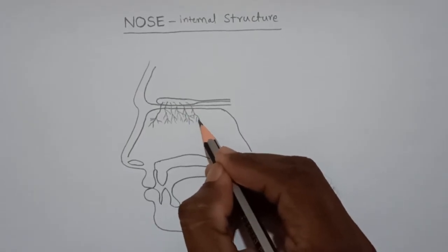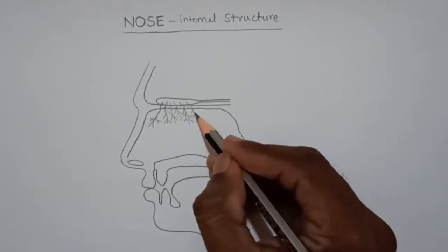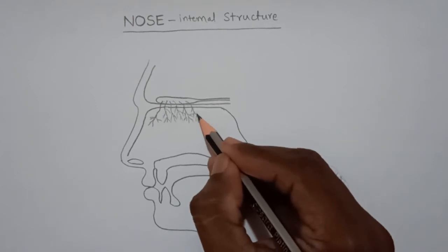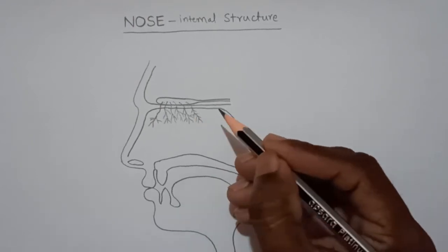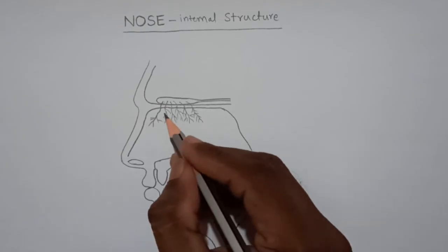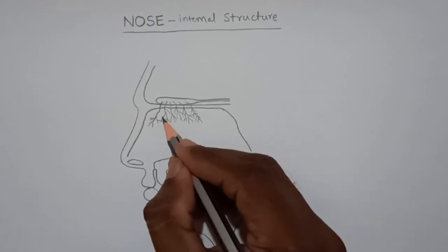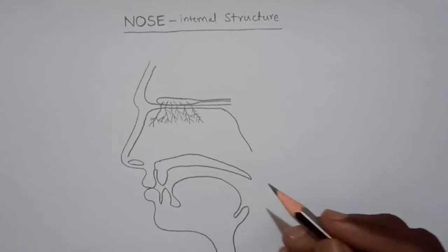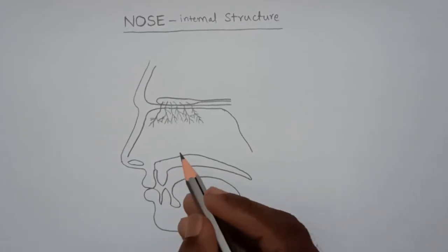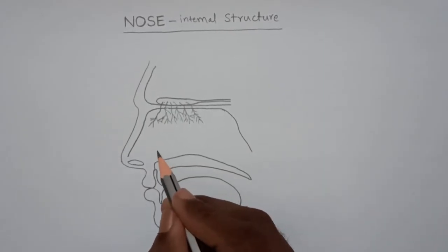These are all the olfactory nerves which end in olfactory receptors which receive olfactory scent, and here we have to draw three lobes.